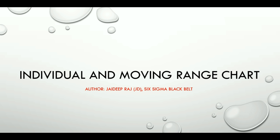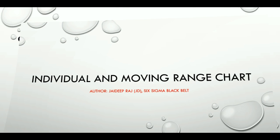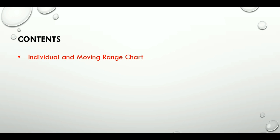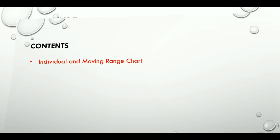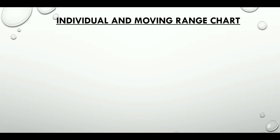Control charts for continuous data are of three types: individual and moving range chart, X-bar and range chart, and X-bar and standard deviation chart. In this video, we will explore the individual and moving range chart.